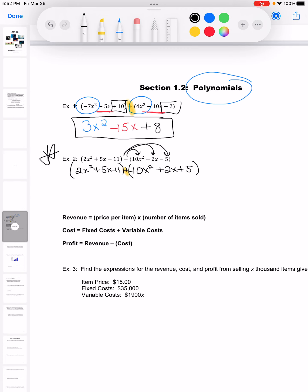Now I can combine my like terms, just like I did up above. So I've got a 2x squared and a negative 10x squared. That's going to give me negative 8x squared.